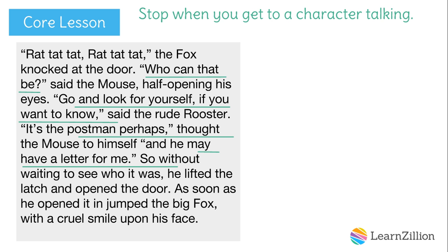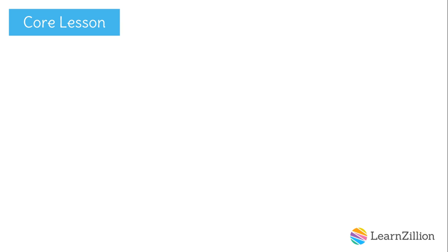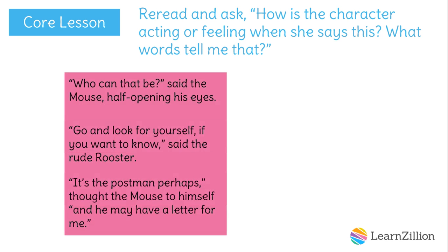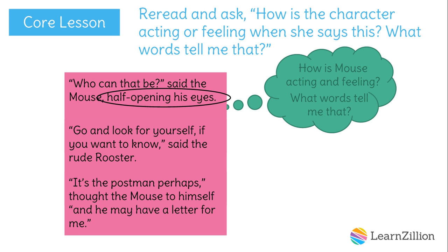Since I have so much talking on this page, I'll jot it down to keep track. Now that I've found the talking words, I need to read them again and ask, how is the character acting or feeling when she says this? What words tell me that? Let's start with our first piece of talking. Who can that be? Said the mouse, half opening his eyes. Mouse was sleeping, and now he's half opening his eyes — he's not all the way awake. Mouse is feeling sleepy.